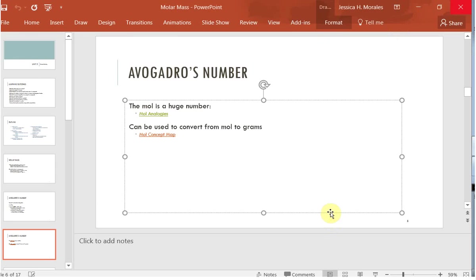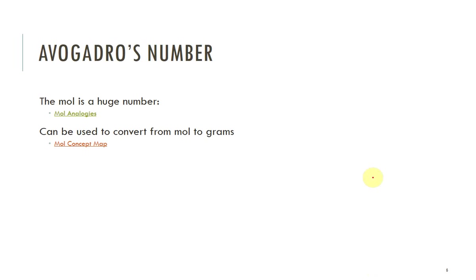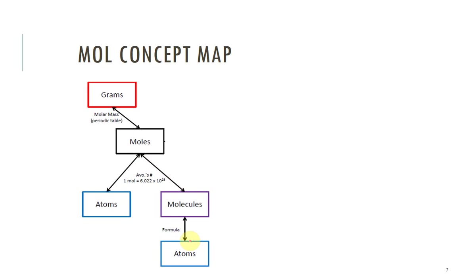The other thing I have for you is this mole concept map. We said a second ago that 12 grams of carbon-12 is one mole. So we can use the molar mass — or the atomic mass, depending on if we're talking about an atom or a molecule — to go from grams to moles. Then we can use Avogadro's number to go between moles and other things: atoms like sodium, or molecules like NaCl. We have this way of converting between different quantities.